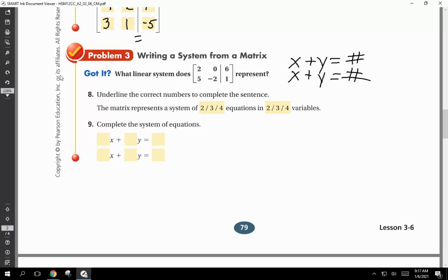Underline the correct numbers to complete the sentence. The matrix represents a system of two equations. There's two equations here, 1, 2. And how many variables? Just two variables, because there's two columns before the equal sign. Complete the system of equations. There's only an x and a y, no z. You're going to put these numbers right here into the matrix. Very simple. Two. There's a zero here, so you're going to put that zero into the matrix. Then it equals a six. Here's that six. Next line, very simple. Five, negative two, and a one. That's all you do. Very simple. Now we're flying.